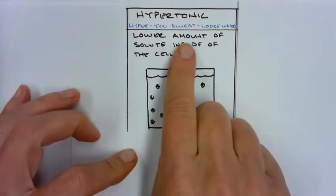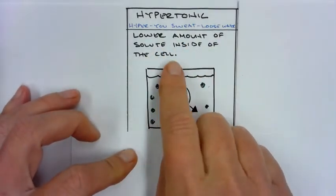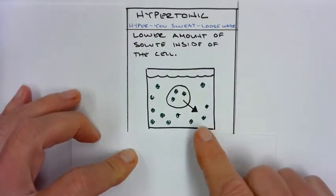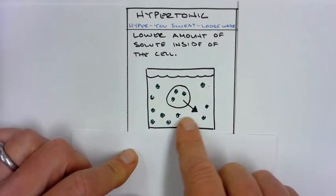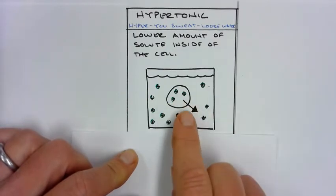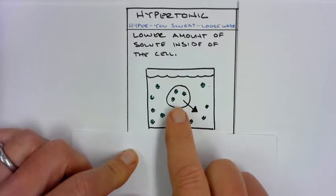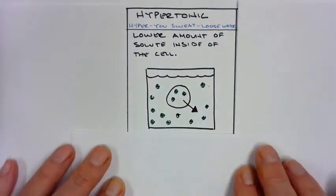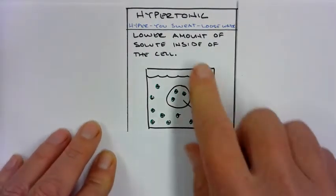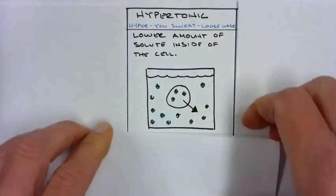In this scenario, we have a lower amount of solute inside of the cell compared to outside of the cell. So you can see there's lots of salt around the outside, whereas there's only three on the inside, and so water wants to make the ratio even. It wants to flow out to dilute this group out. So water is flowing out of the cell, hypertonic, just like you're sweating, you're losing water.